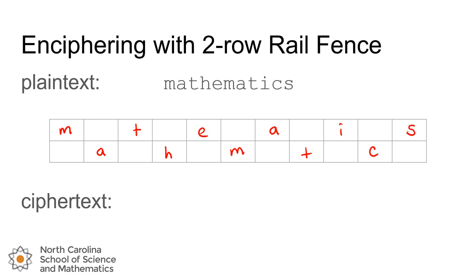Once we've completed the grid we can reassemble these letters, putting the top row letters first and then joining them with the bottom row letters. Notice that I've written the characters in the standard formatting for cipher text: uppercase, blocked into groups of five characters.